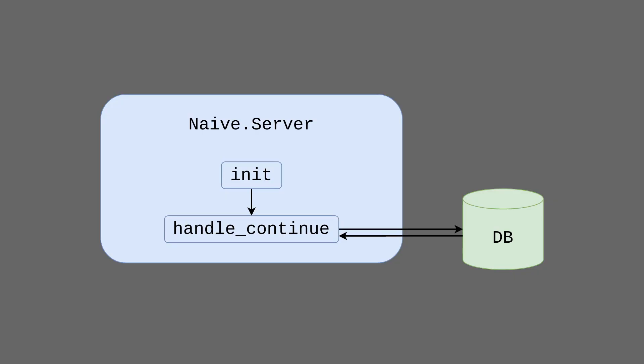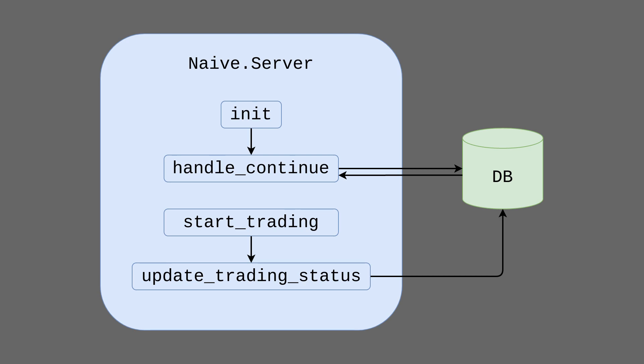First we will implement the auto-starting trading functionality by modifying the naive server module. We will update the init function to trigger the handleContinue callback where we will fetch all the symbols enabled for trading and start supervision trees for them. We will also modify the start trading function to update the database to keep track of the traded symbols.